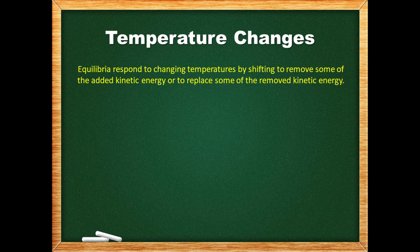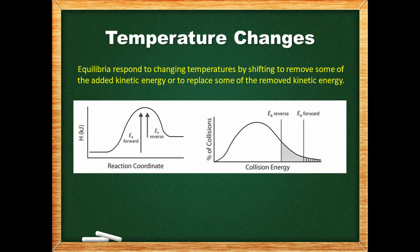If the forward and reverse reactions have the same collision geometry requirements, then their rates depend entirely on the frequency of collisions possessing the activation energy. The frequencies must be the same for both reactions since the forward and reverse reaction rates are equal. The percentage of area under a collision energy distribution curve at or beyond the activation energy represents the percentage of collisions that have enough energy to react. These diagrams are for an endothermic reaction, where the activation energy for the endothermic forward direction is larger than for the exothermic reverse direction. Therefore, a smaller percentage of collisions possess the endothermic forward activation energy than the exothermic reverse activation energy.